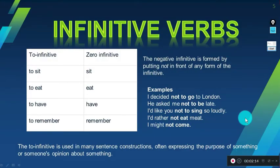Here we have the two kinds of infinitive verbs. The to-infinitive: to sit, to eat, to have, to remember. And the zero infinitive: sit, eat, have, and remember.